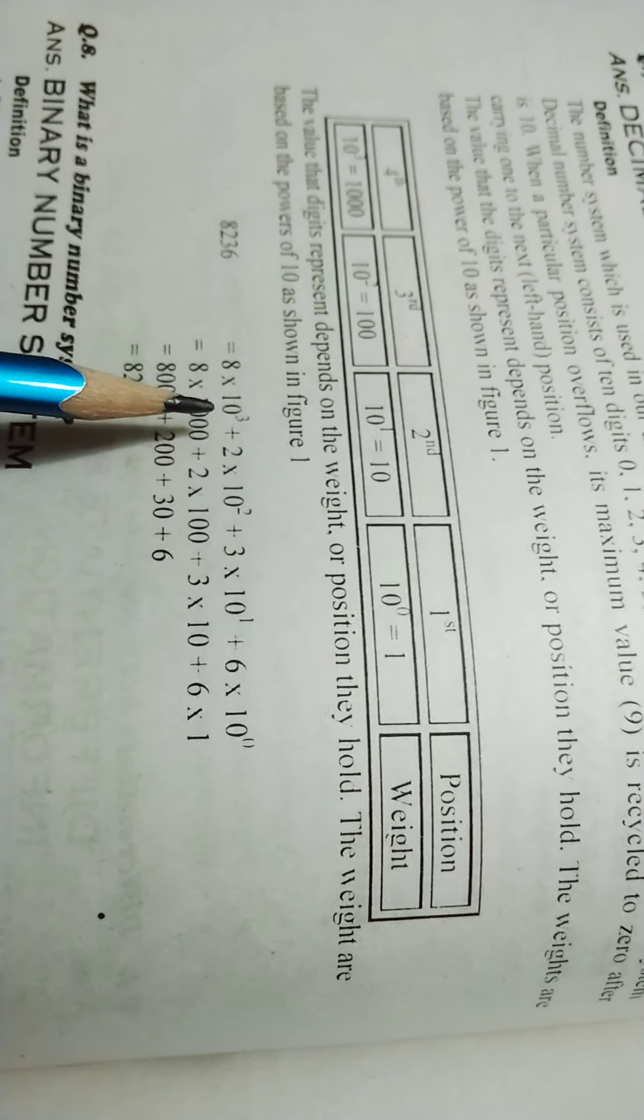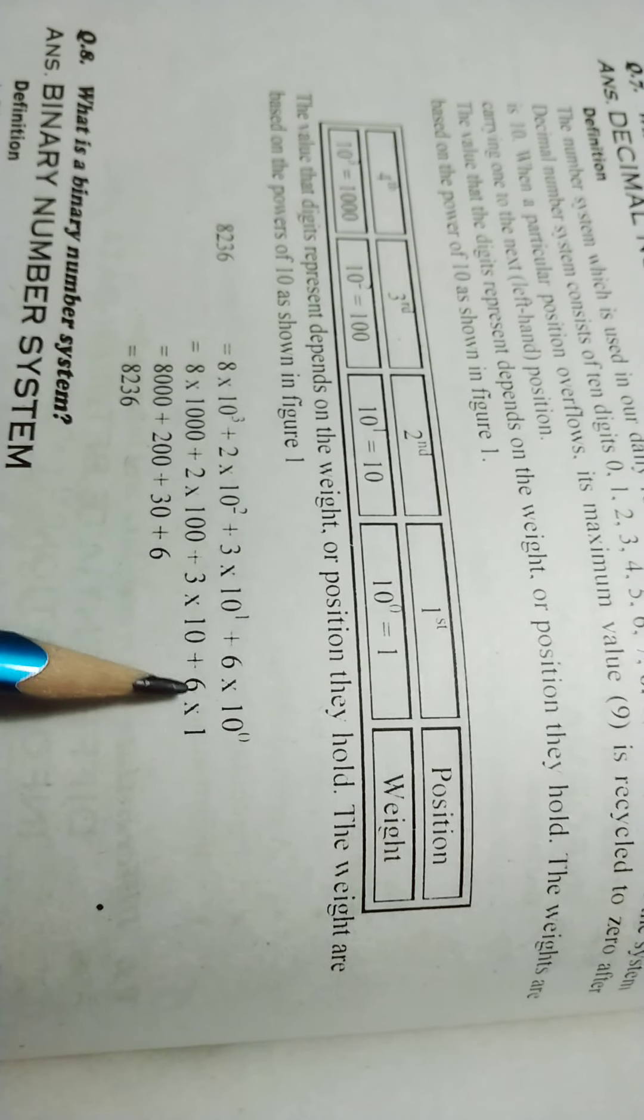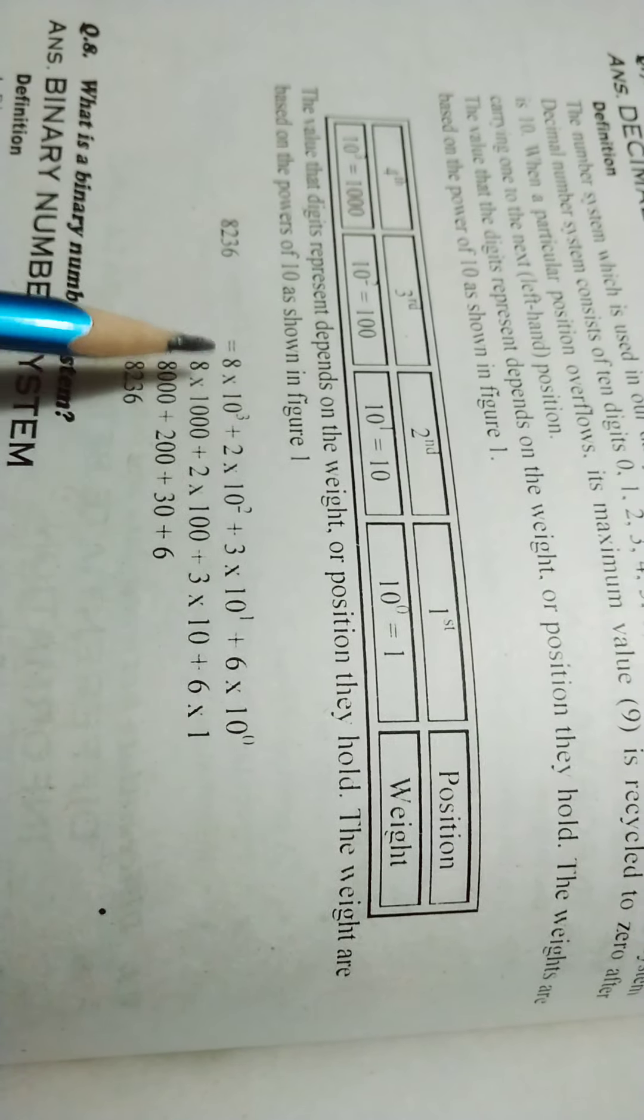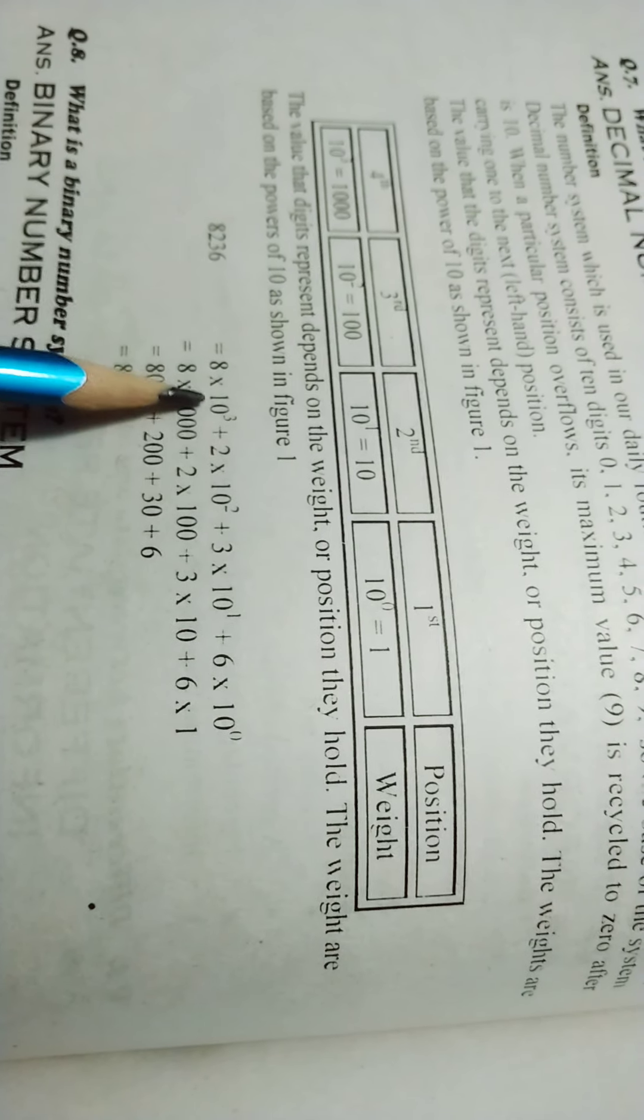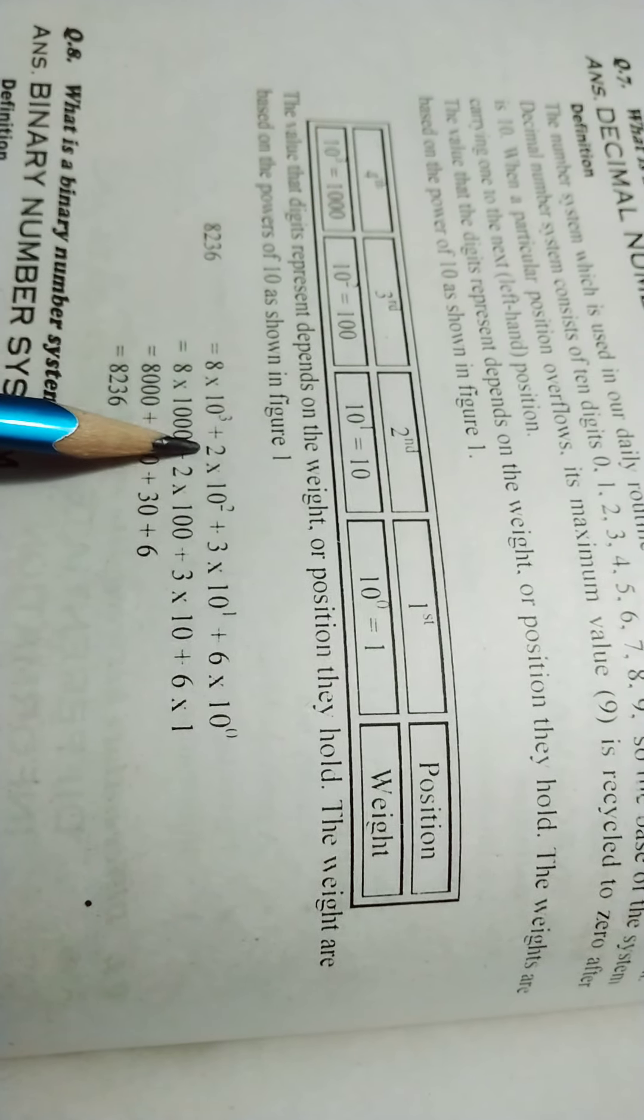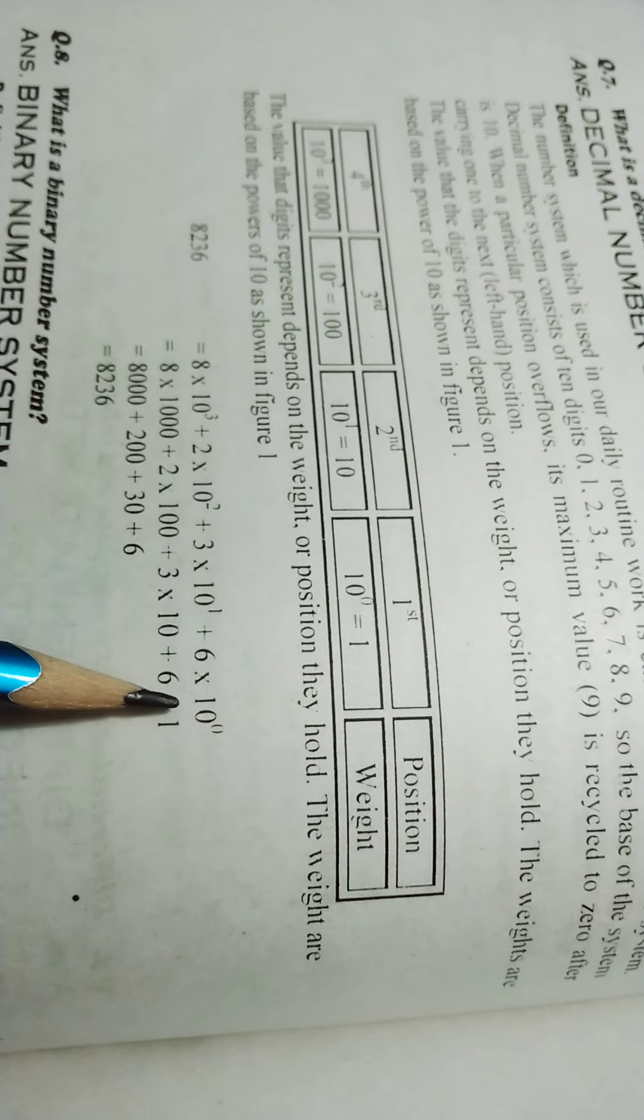This is the decimal number system. For example, if we have the number 8236.